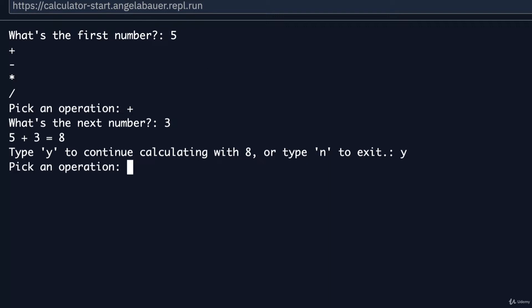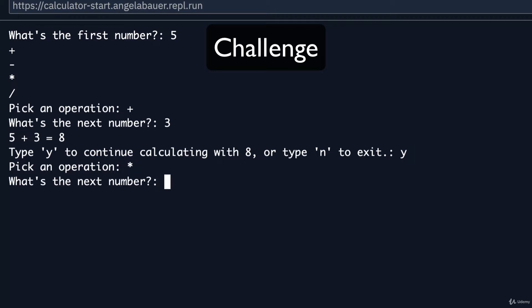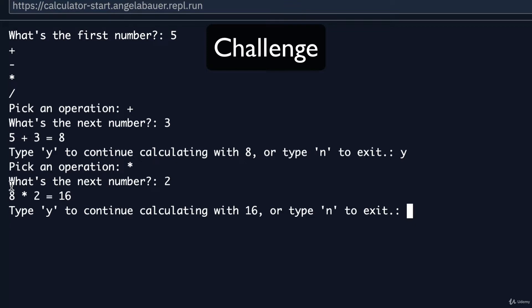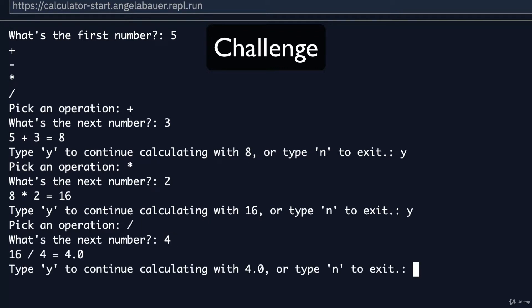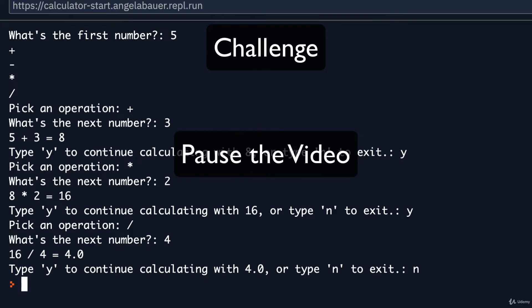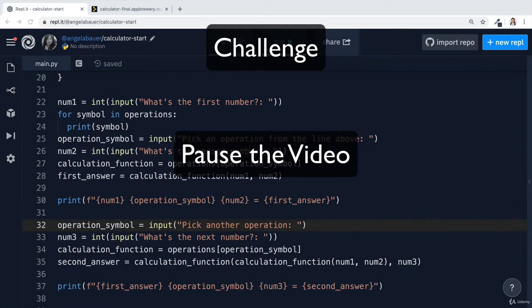I want to throw this over to you as a challenge. Can you use a while loop and the input function to achieve this? Ask the user: 'Type Y to continue calculating with the previous result, or type N to exit.' If the user types Y, your calculator should allow them to continue chaining calculations with the previous answer. If they type anything else, the program should exit for now.